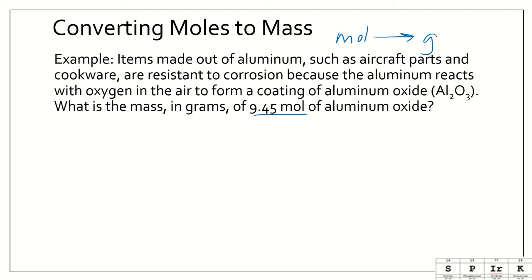We need to calculate the molar mass. The molar mass of aluminum oxide, or Al2O3, is 101.96 grams per mole. That's the key piece of information that we need. Now we know that right now we have 9.45 moles of aluminum oxide, and it wants the mass in grams.